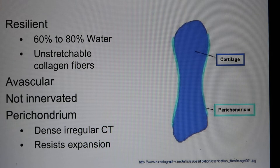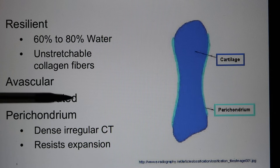Outside the cartilage, there is dense irregular connective tissue covering it to maintain the shape and reduce expansion. This is called the perichondrium — that's the membrane covering the outside.